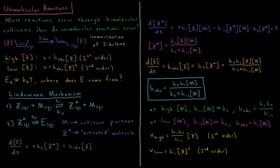So there are two different regimes here. One where we have high concentration of our reactant, where the rate is equal to a rate constant times Z, so it's first order at high concentration. At low concentration, the rate equals some different observed rate constant times the concentration of our reactant squared — so it's second order at low concentration. Additionally, we know that the activation barrier for this reaction is much greater than the thermal energy; it's much greater than kT. So where does that energy come from?